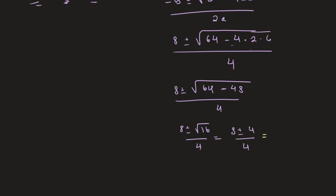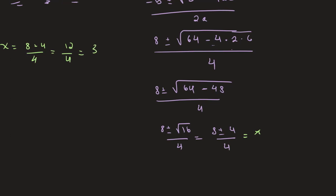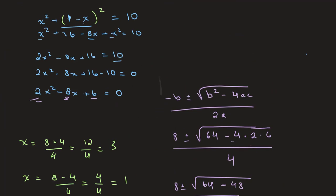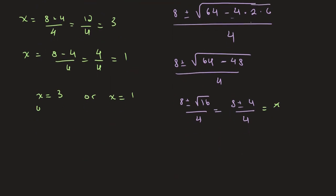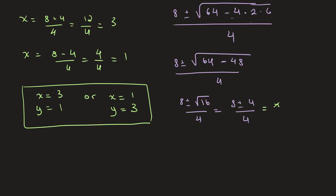This gives us two possible values for x. x equals 8 plus 4 over 4, which is 12 over 4, equal to 3. And x equals 8 minus 4 over 4, which is 4 over 4, equal to 1. To get our final solution we solve for y using y equals 4 minus x. When x equals 3, y equals 4 minus 3, which is 1. When x equals 1, y equals 4 minus 1, which is 3. And this is the solution to our question.